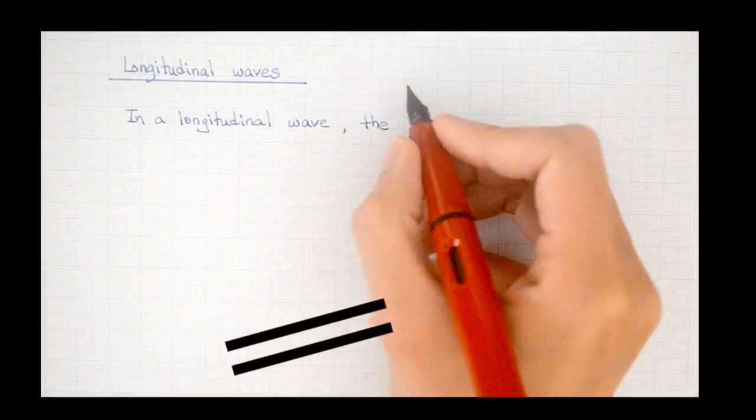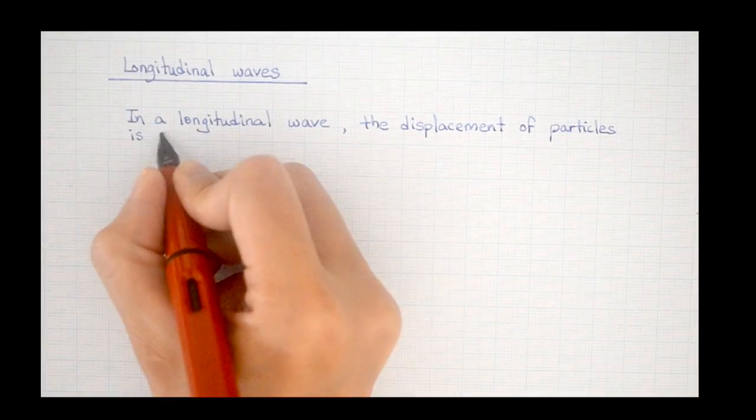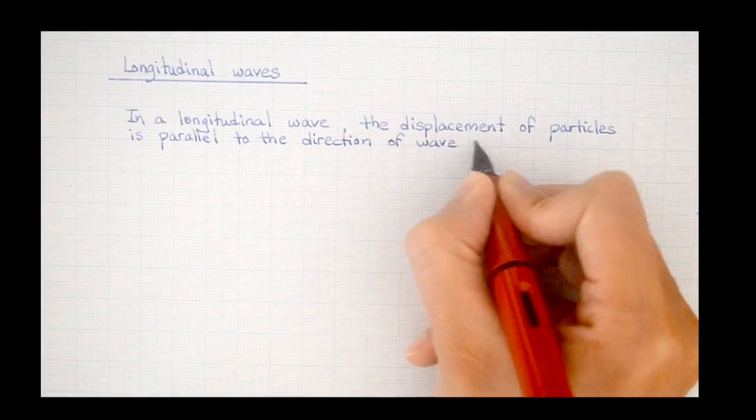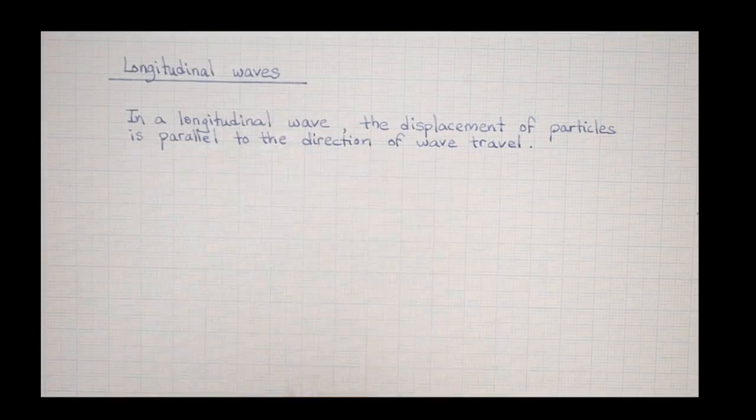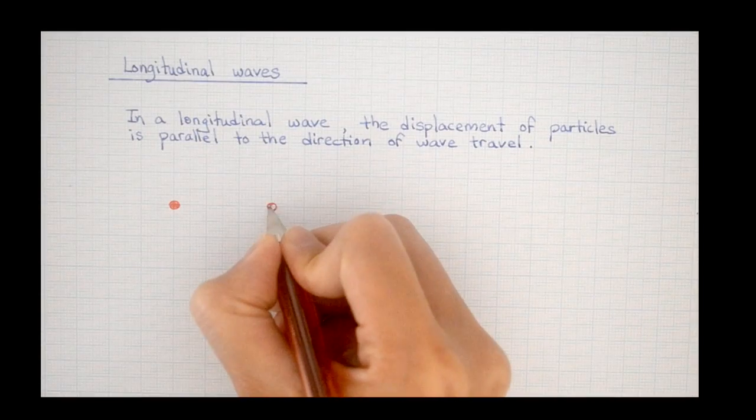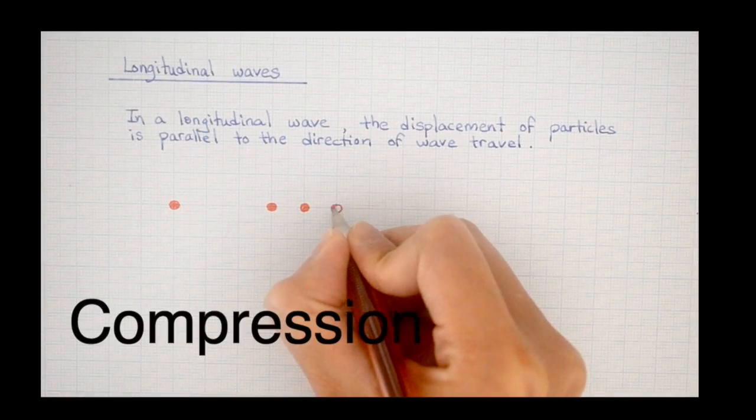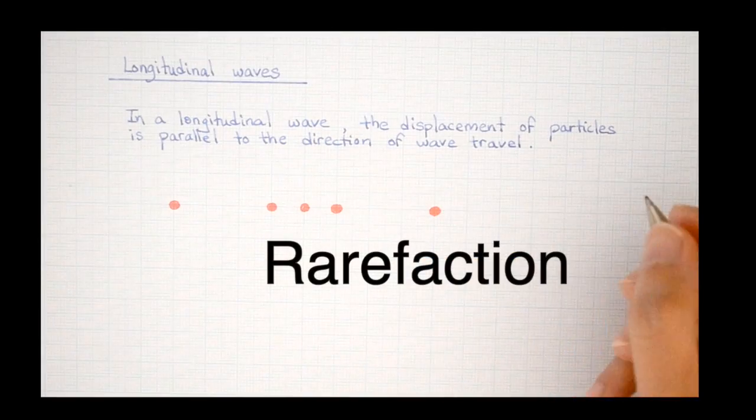But what you might not have been told in GCSE is that the longitudinal wave still has a crest and it still has a trough in each oscillation. Except we call them a compression and a rarefaction, respectively.